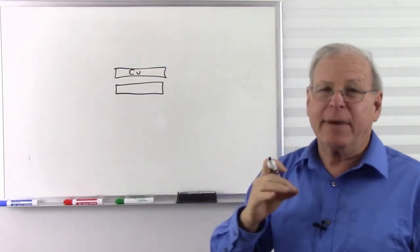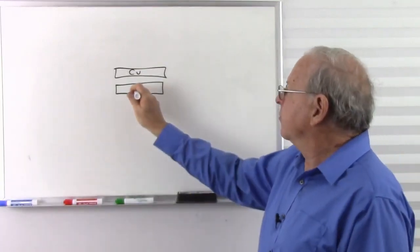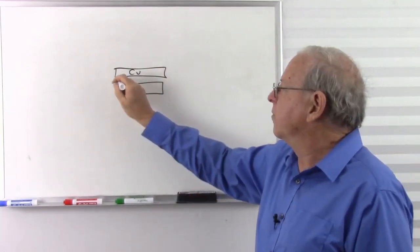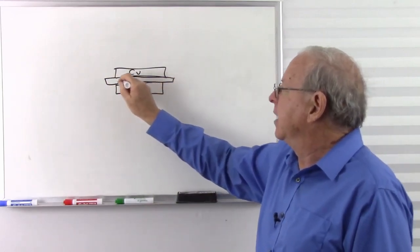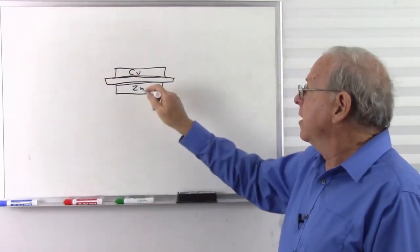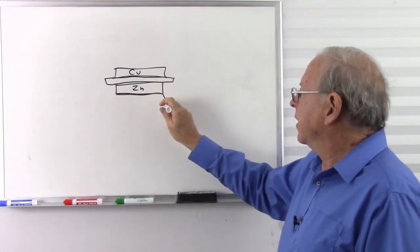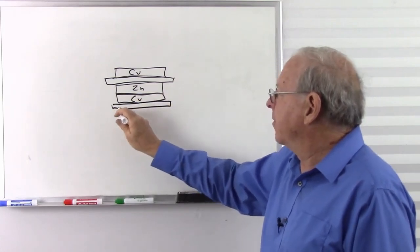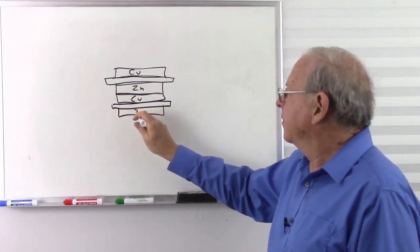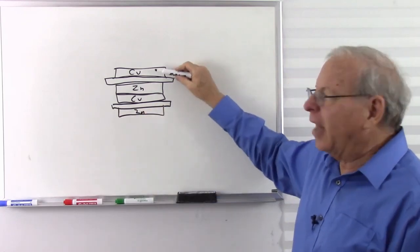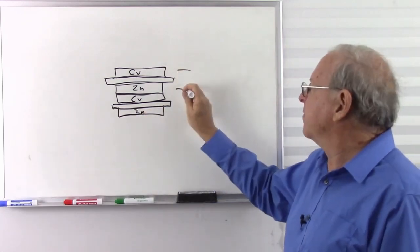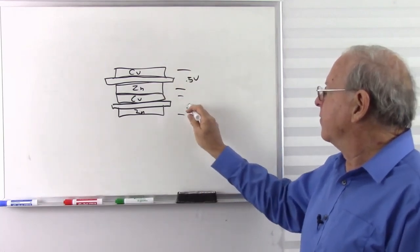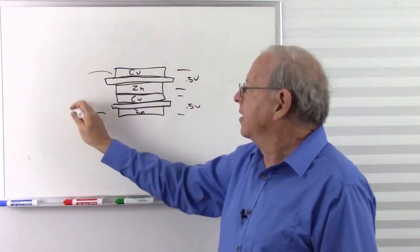In fact, the first battery made by Alessandro Volta was made pretty much of that. So here's some zinc, a disc of copper, a disc of zinc. Volta took some paper saturated in sulfuric acid and put them together. Then another layer of copper, another layer of acid-soaked paper, and some zinc. I think this produced something like about half a volt, and then that produces another half a volt, so together we have one volt.